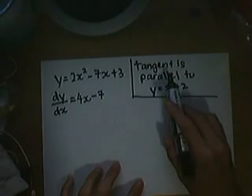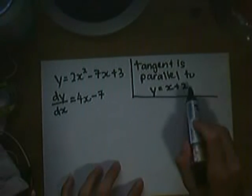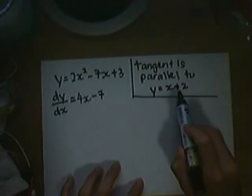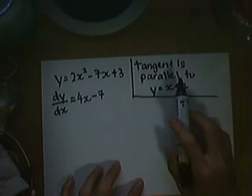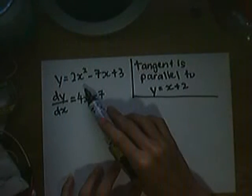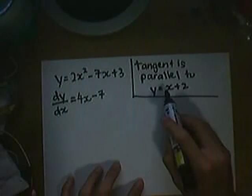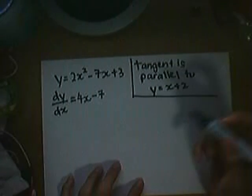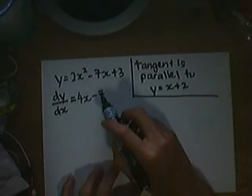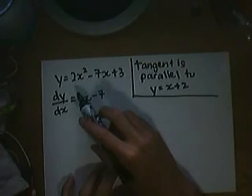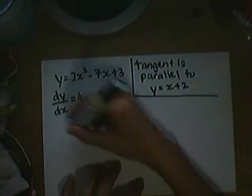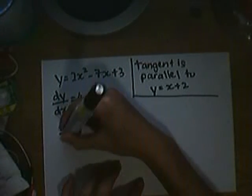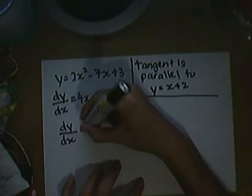As you know, the tangent is parallel to the line y equals x plus 2. This means that the tangent to this curve has the same gradient, which is 1. The dy/dx gives you the gradient of the tangent to this curve. Therefore, dy/dx equals 1.